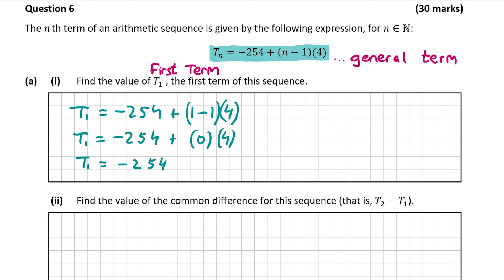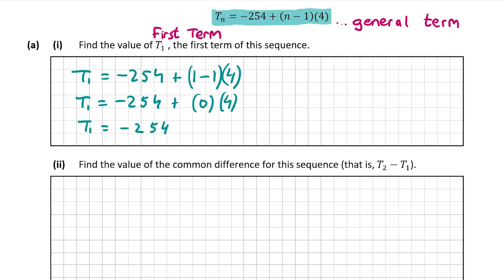Now let's have a look at part 2, where we're asked to work out the value of the common difference for that sequence. We're told that's equal to t2 minus t1. You can think of the common difference like a term minus the term before it — it's the difference between each term. So for example, if I had a sequence 1, 3, 5, the common difference is obviously 2.